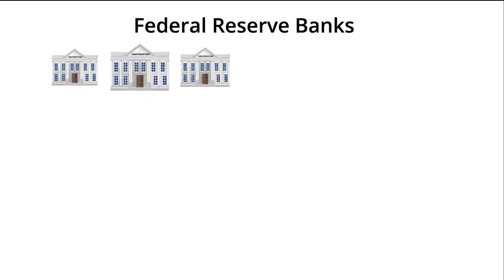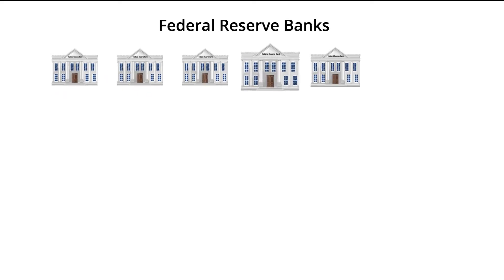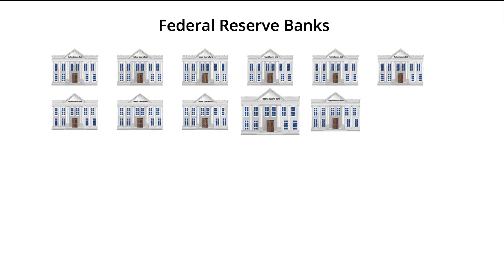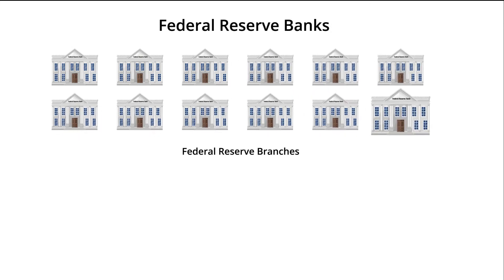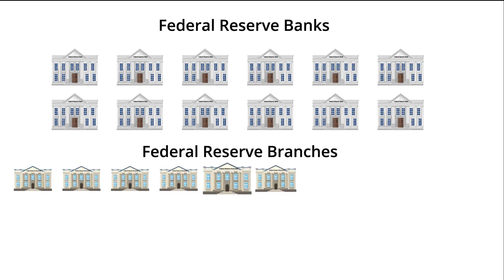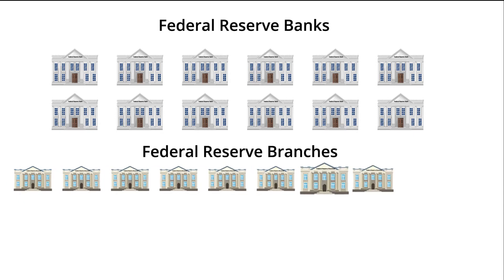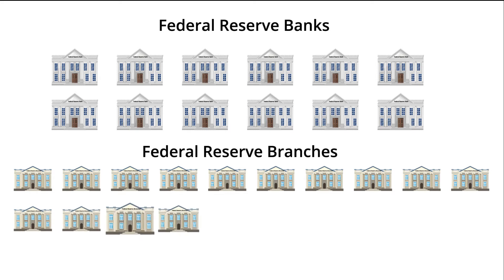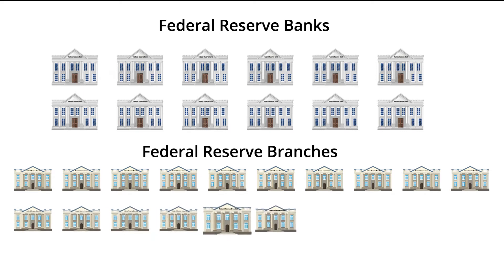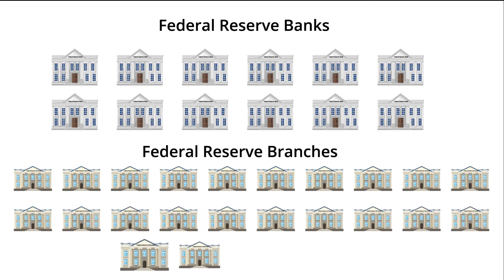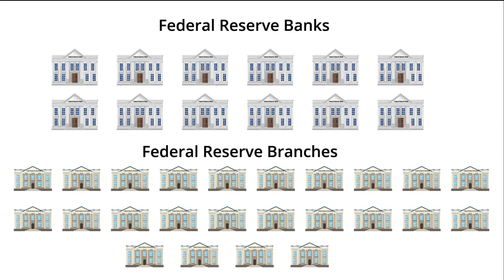Although not technically owned by any particular person or institution, the Fed is controlled by the Board of Governors, which is a part of the federal government. Congress is responsible for holding the board accountable for its actions. The Federal Reserve now consists of a network of 12 reserve banks and 24 branches; however, the reserve banks alone are the operating arms of the central bank.